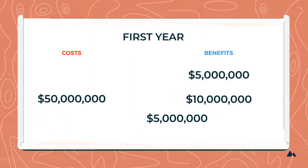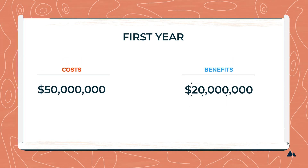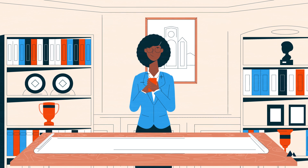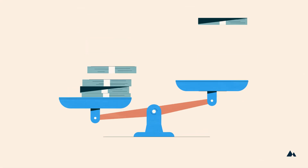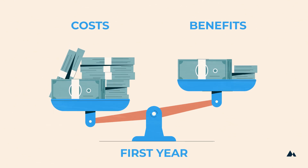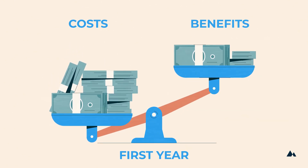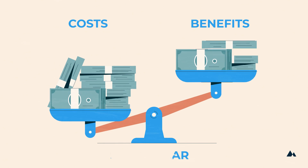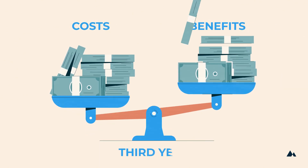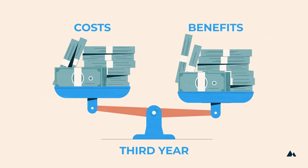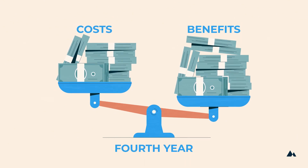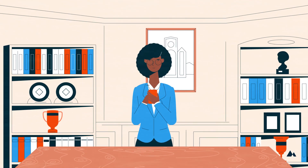Looking at just the first year of the policy, the $50 million of costs exceed the benefits, which add up to $20 million. For a full benefit-cost analysis, however, the government official would continue adding up the ongoing costs and benefits for a number of years into the future. Because infrastructure costs primarily occur in the first few years and benefits from emissions reductions will continue each year into the future, the total benefits from the project may outweigh the total cost of the project in just a few years.